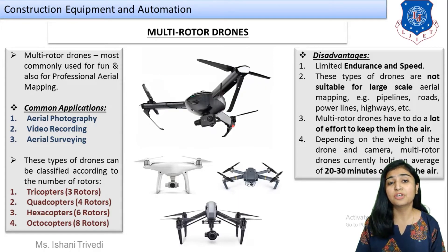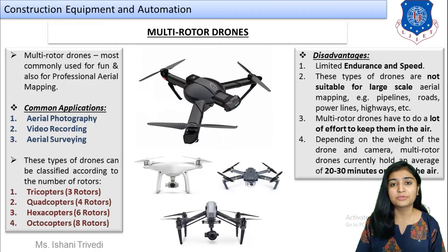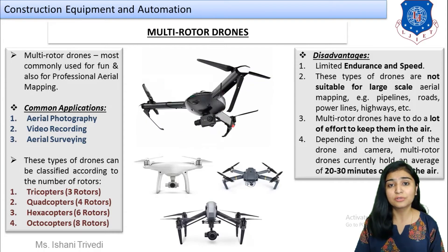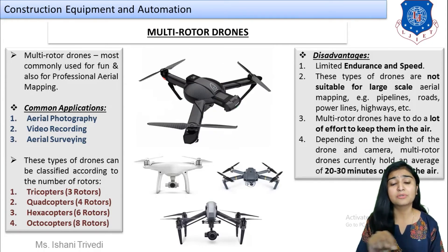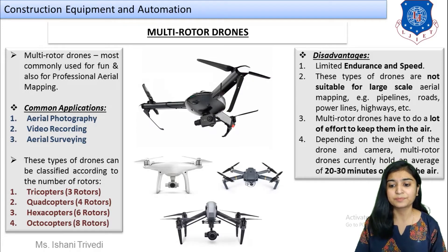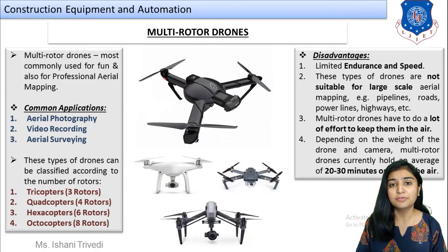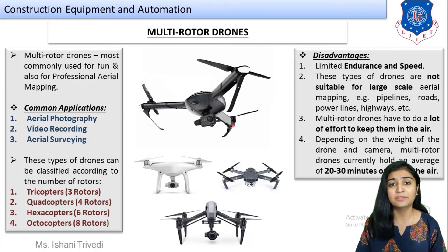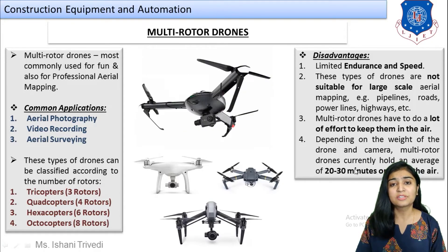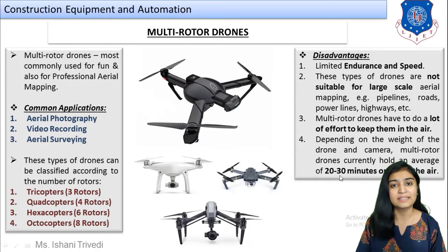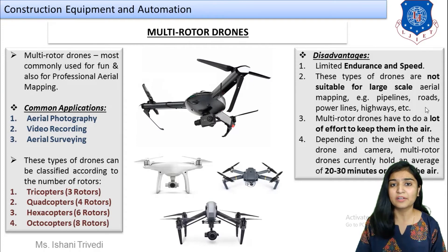Multi-rotor drones have to do a lot of effort to stay in the air — constant power and constant control are required. The blades must constantly keep rotating against atmospheric action and wind, so more power is required. Also, depending on the weight of the drone and the camera — lower weight allows more speed, but more weight reduces speed — multi-rotor drones currently hold an average of 20 to 30 minutes or less in the air per flight cycle.